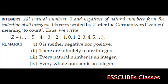What are integers? All natural numbers, 0, and negatives of natural numbers form the collection of all integers. It is represented by the English alphabet Z. Conventionally, Z is from minus infinity to plus infinity, where 0 is also included. We must take note: 0 is neither negative nor positive. There are infinitely many integers and both whole numbers and natural numbers are part of the integer family.